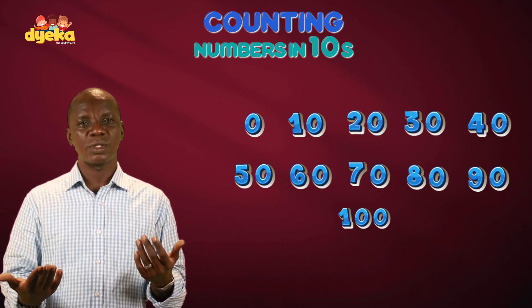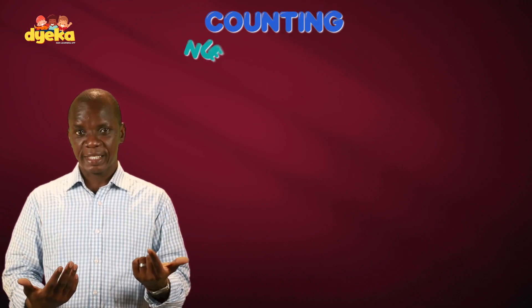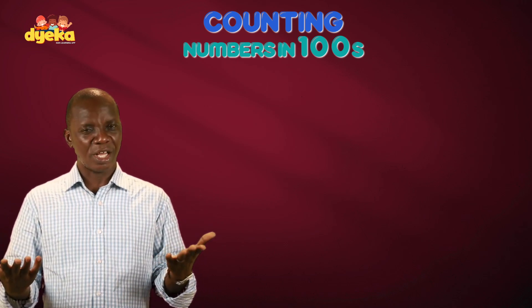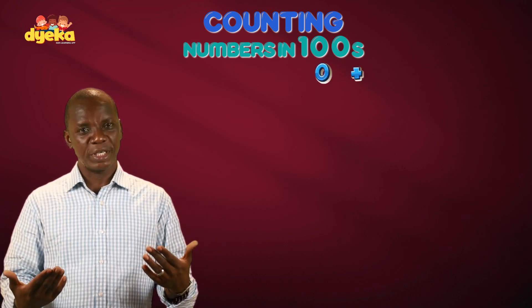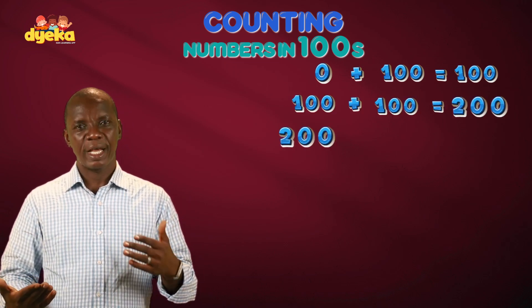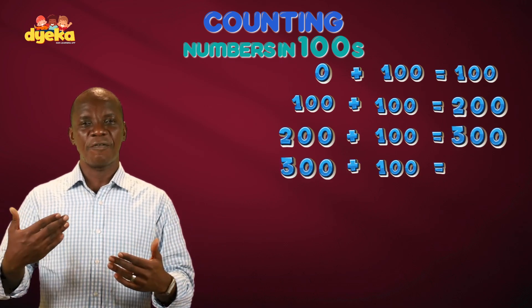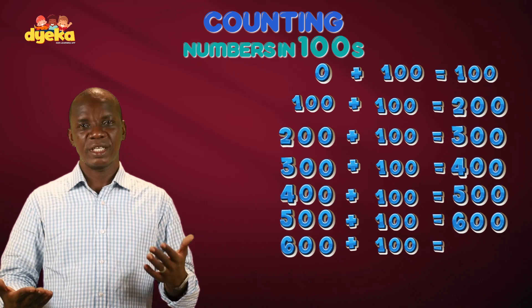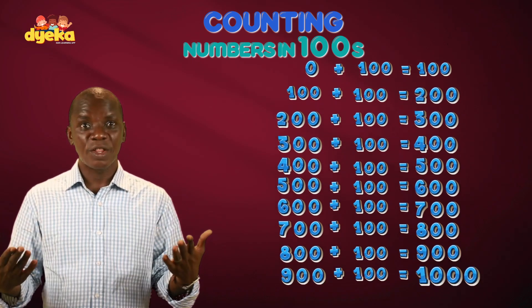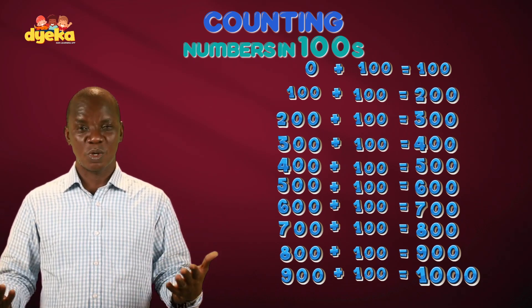Now let's try to count in hundreds. Let's start from zero. Counting in hundreds, we're going to just keep adding 100. Zero plus 100 gives you 100, and add another 100 you get 200, and another 100 you get 300. If we keep going on and on we have 400, 500, 600, 700, 800, 900, and 1000. We just counted in hundreds up to 1000.